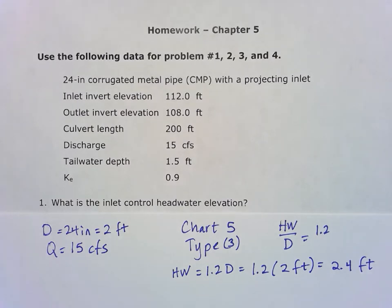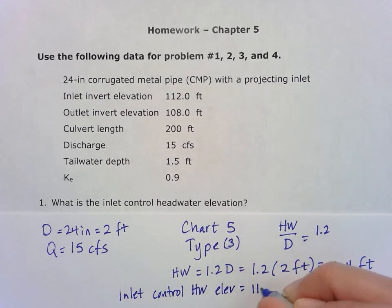To find the headwater elevation at inlet control, I take the inlet invert elevation of 112.0 feet and add the 2.4 feet to it. That's how we get 114.4 feet for the answer to problem one.